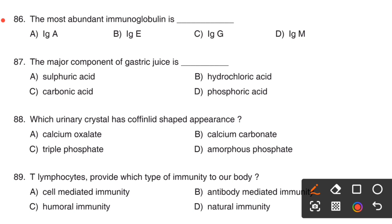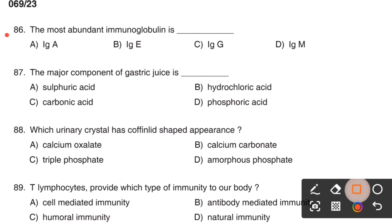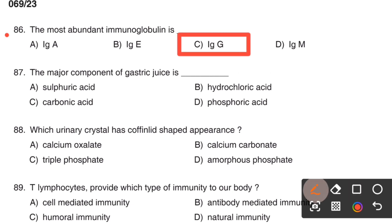Next question. The most abundant immunoglobulin is: Option A, IgA. Option B, IgE. Option C, IgG. Option D, IgM. The right answer is Option C, IgG.